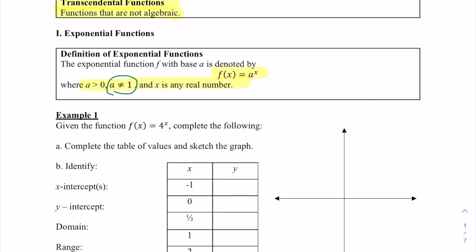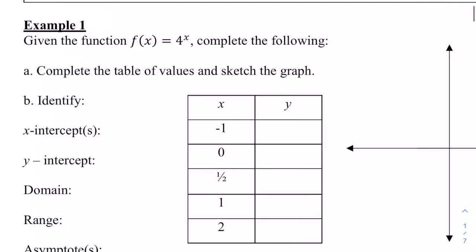Let's complete this table of values and identify the characteristics of the graph for the function f of x equals 4 to the x. If we plug in negative 1, that's going to be 1 fourth. When we plug in 0, 4 to the 0 will be 1. Now 4 to the 1 half is the square root of 4, which is just 2. 4 to the 1 is 4, and 4 squared is 16.